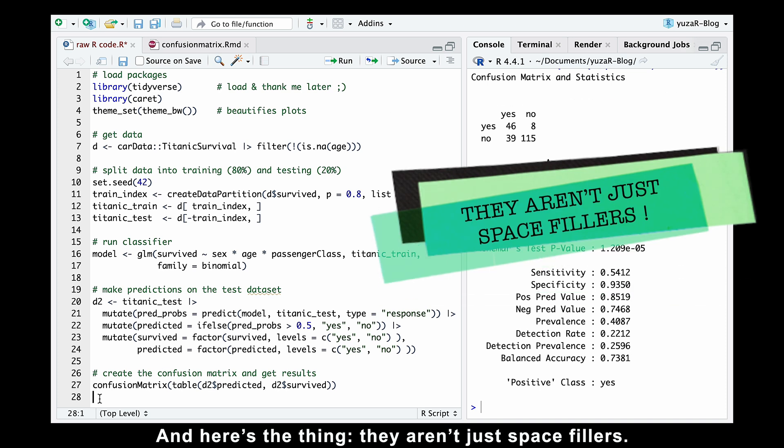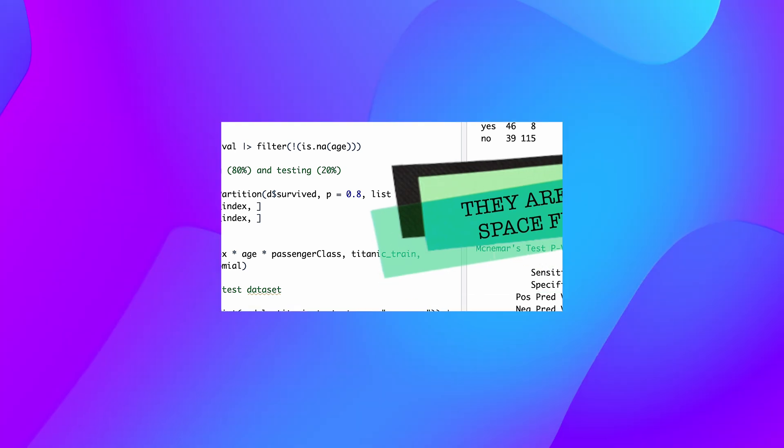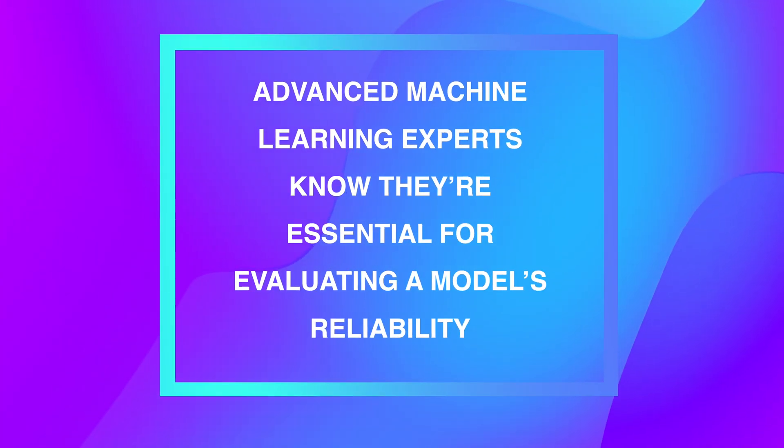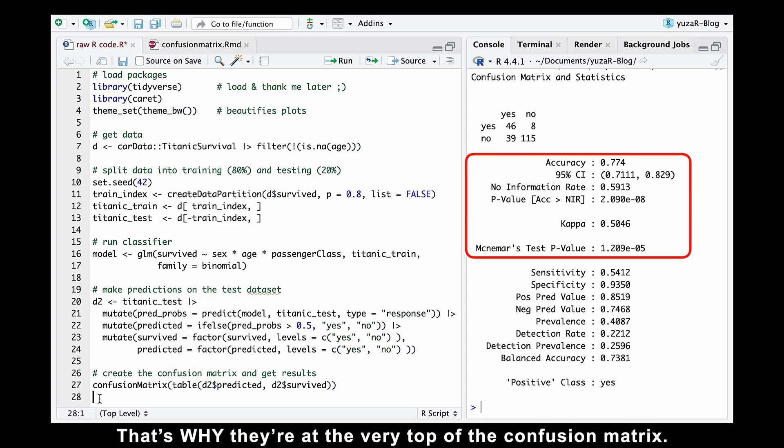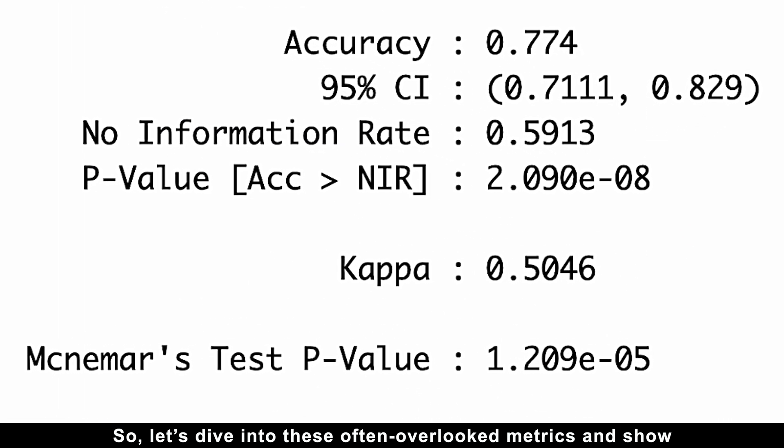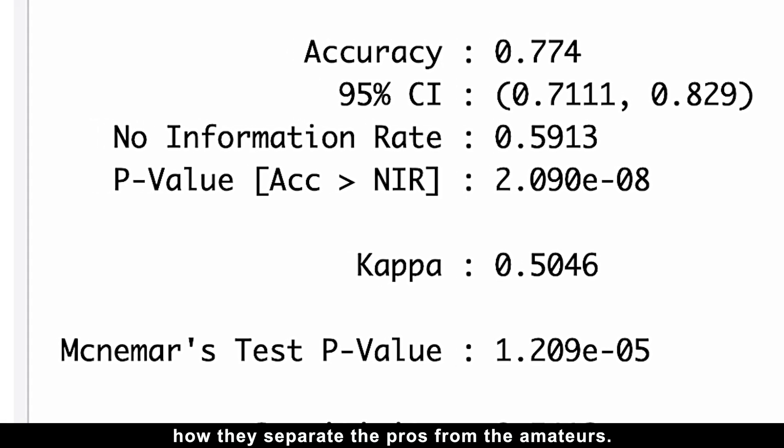And here's the thing, they aren't just space fillers. Advanced machine learning experts know they are essential for evaluating a model's reliability. That's why they are at the top of the confusion matrix. So let's dive into these often overlooked metrics and show how they separate the pros from the amateurs.